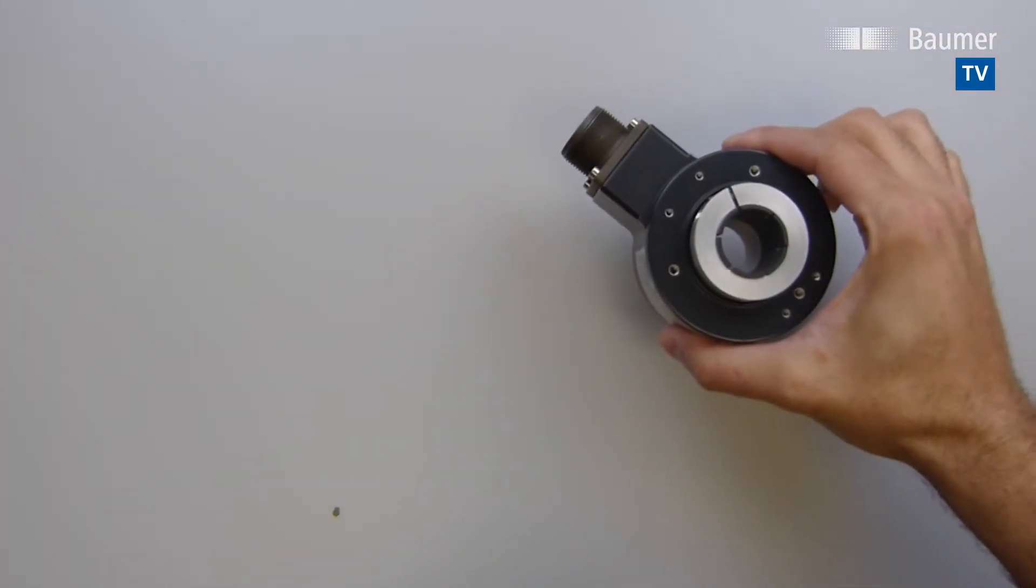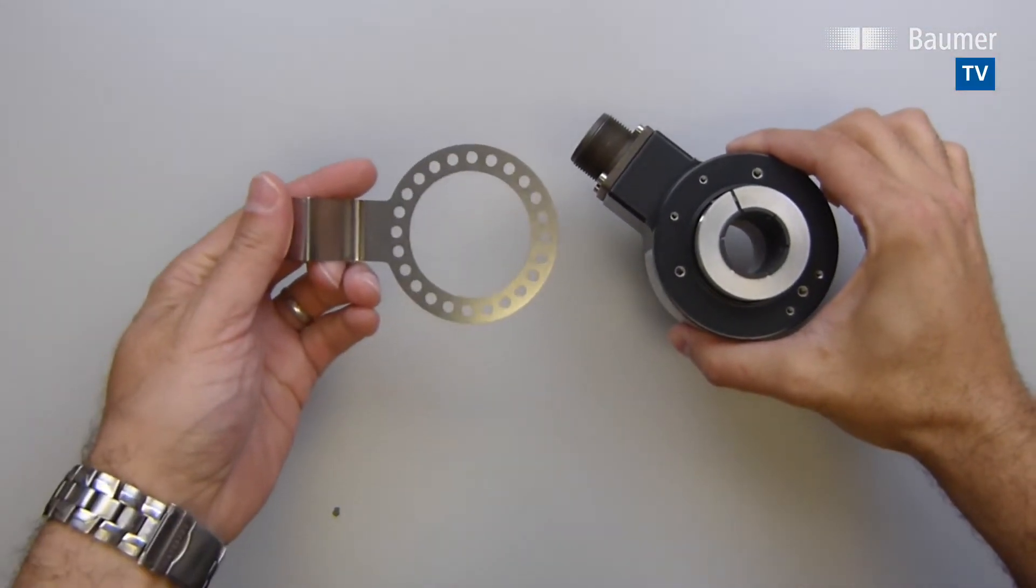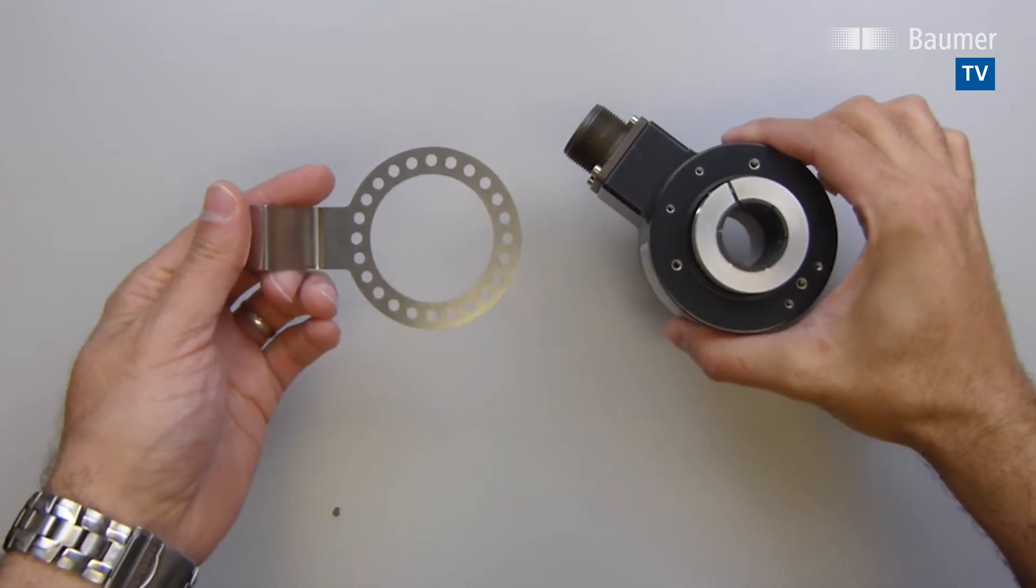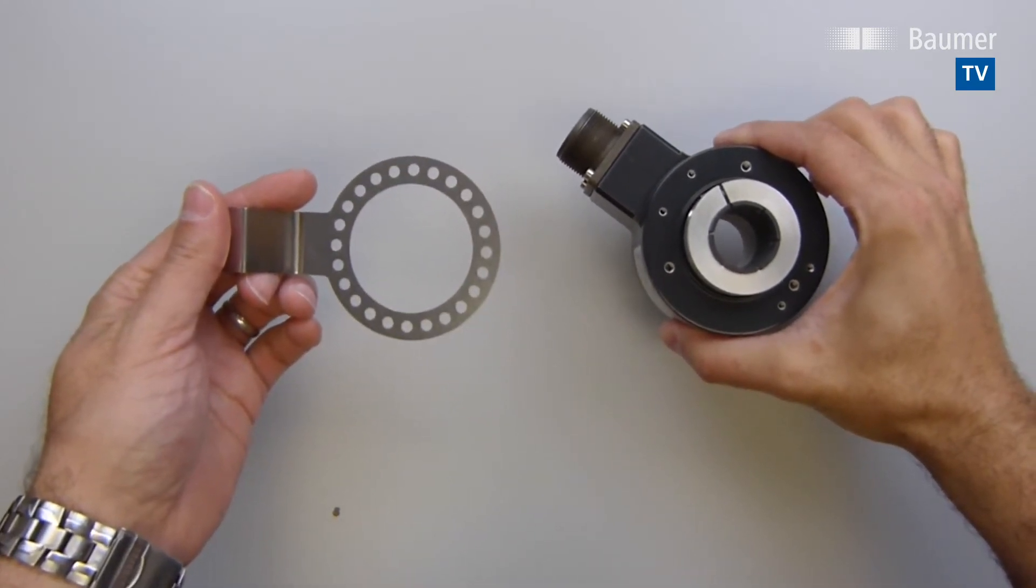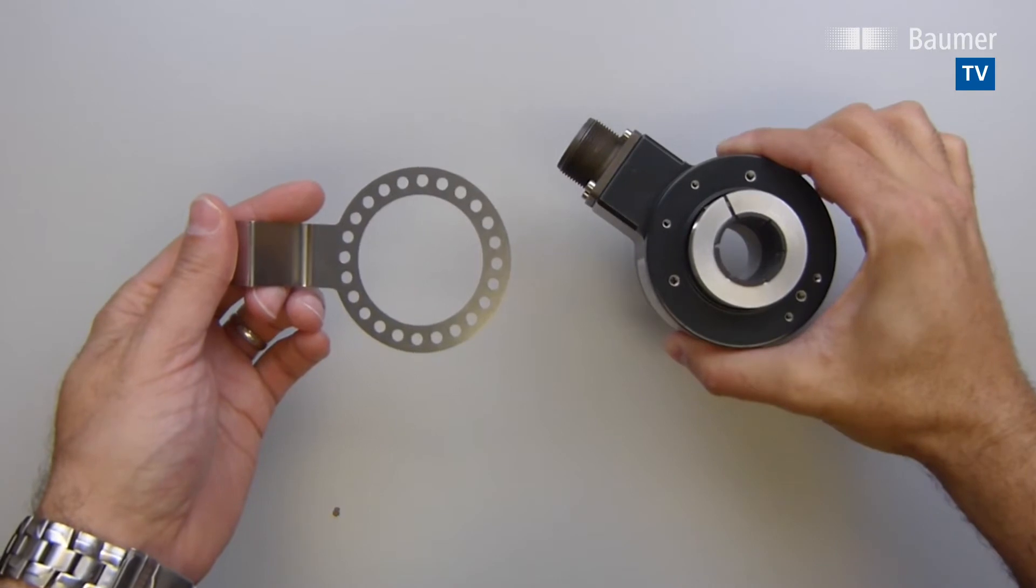BAMR's programmable HS35P incremental encoders and REM kits make it easy for users to drastically reduce inventory while still solving any system stoppage in a matter of minutes. Let's see how it works.